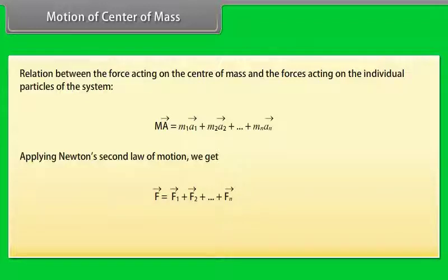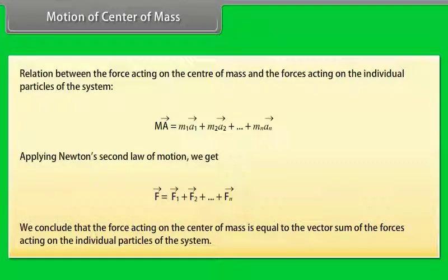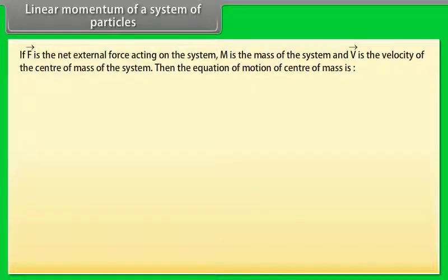Regarding the relation between the force on the center of mass and forces on individual particles: m·a = m1·a1 + m2·a2 + ... + mn·an. Applying Newton's second law, F vector = F1 + F2 + ... + Fn. We conclude that the force acting on the center of mass is equal to the vector sum of the forces acting on the individual particles of the system.